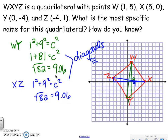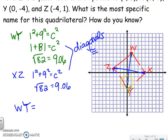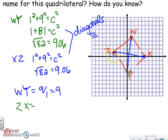But diagonals are also congruent in a rectangle, so I need to do one more thing to prove it's a square — confirm the diagonals are perpendicular. I need the slopes of WY and ZX. For WY, counting rise over run from the bottom: up 9, over 1, so the slope is 9. For ZX, starting at Z: down 1, over 9, so the slope is -1/9.